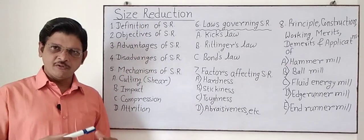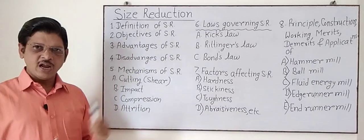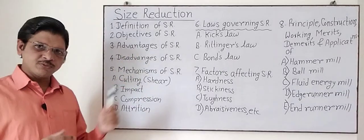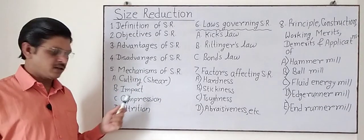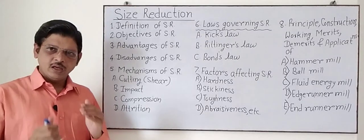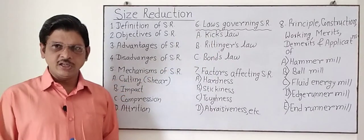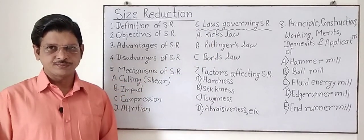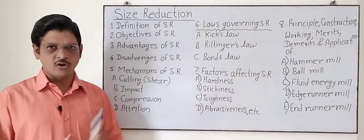In the previous lectures, we studied the definition of size reduction, objectives of size reduction, advantages and disadvantages of size reduction, and mechanisms of size reduction. In mechanisms, we studied cutting, impact, compression, and attrition. In today's lecture, we will study laws governing the requirement of energy for the process of size reduction. These laws are Kick's law, Rittinger's law, and Bond's law.